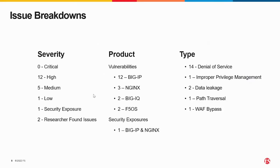Just to give you a quick breakdown of the issues: there are no critical vulnerabilities in this QSN, so that's good news for everybody — there's nothing that is an absolute showstopper. We do have 12 highs, and those are predominantly denial of service vulnerabilities. Denial of service vulnerabilities predominantly affect specific configurations, so do check to see if your configuration is impacted when you want to understand your risk. We have coverage among a number of products here — mostly BigIP — but we do have three NGINX vulnerabilities, which I'll talk about in a couple of slides' time.